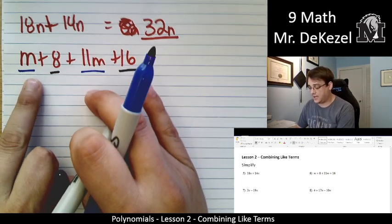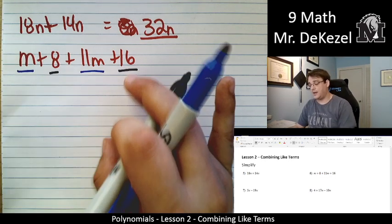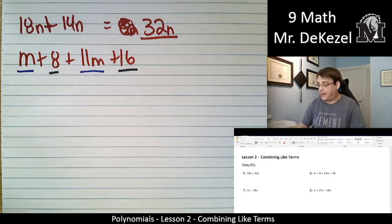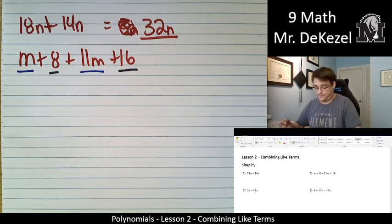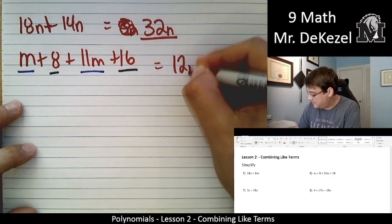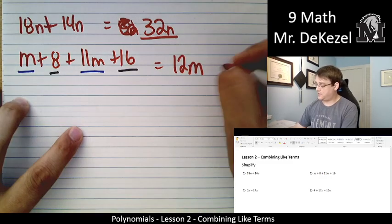Everything in the first degree, we add together. Everything in the zeroth degree, we add together. Everything with the same exponent in their variable gets added together. So we would add m and 11m. If you add 1m to 11m's, you get 12m's. And then you add 8 and 16, well, that's just 24.